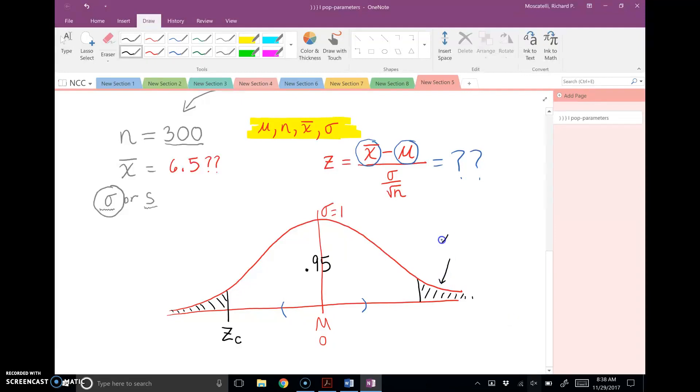And if you take that alpha and split it equally between these two tails, this will be alpha divided by 2. That'll be 0.025. Alpha over 2, 0.025.